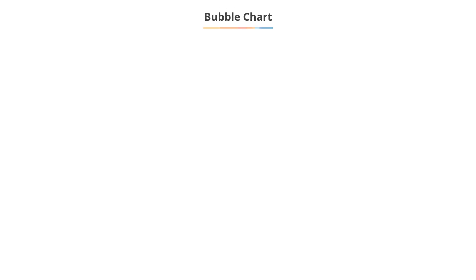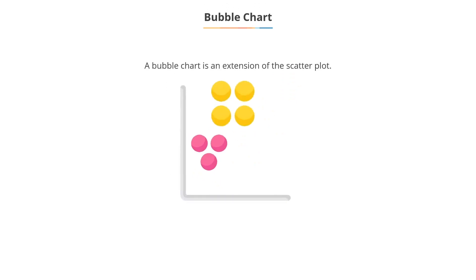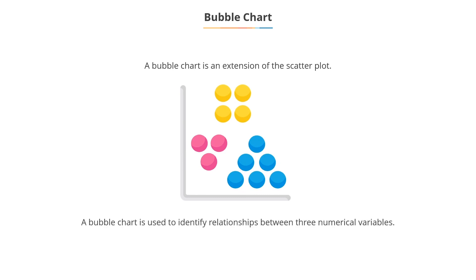The last chart we are going to look at is the bubble chart. A bubble chart is an extension of the scatter plot used to identify relationships between three numerical variables.